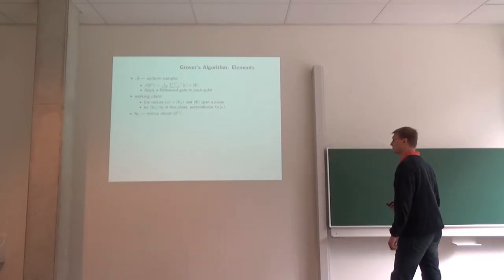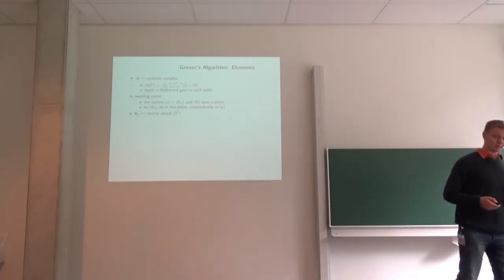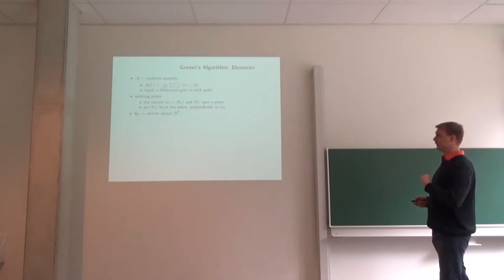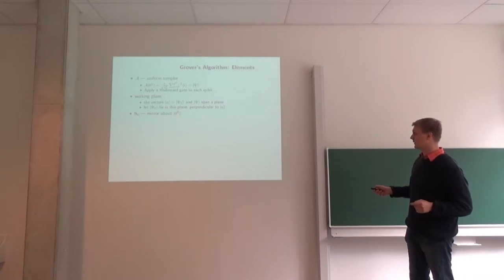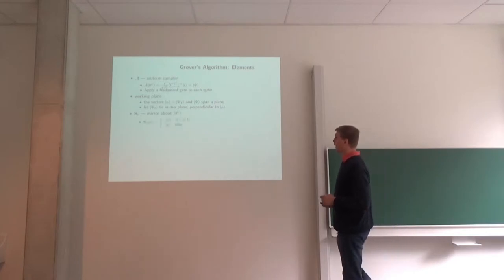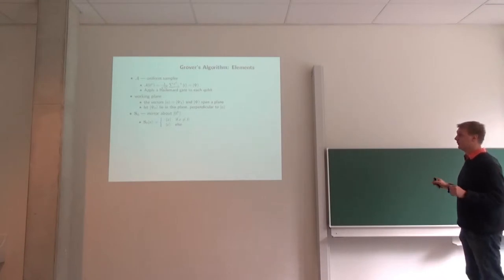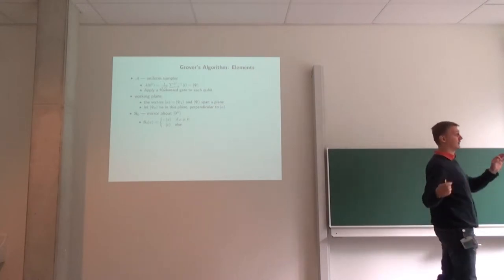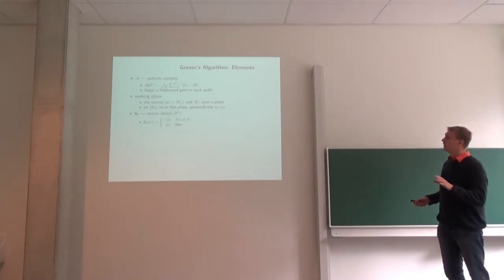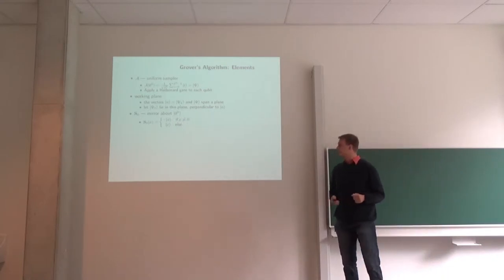But first we're going to flip about the 0 bit string. This is a mirroring in the plane about this vector. Notice that 0 does not necessarily coincide with this vector. Mirroring about the 0 bit string is defined as follows: if the value is 0, then it stays the same; and if it is different from 0, then its amplitude is negated.